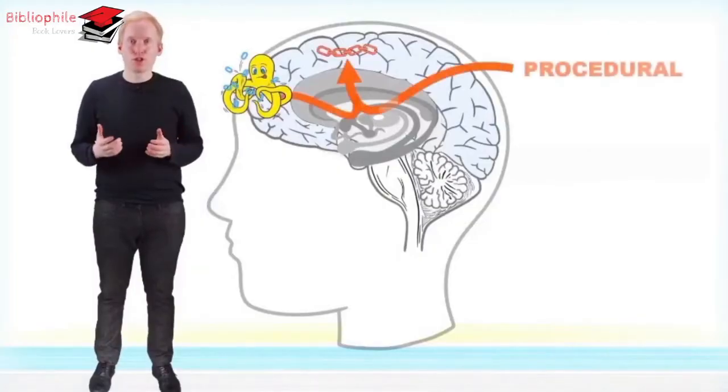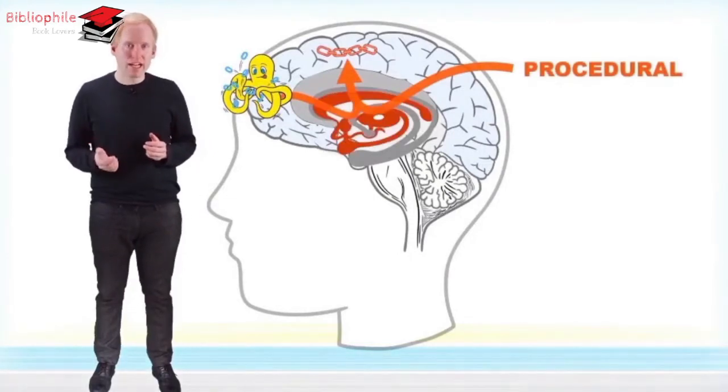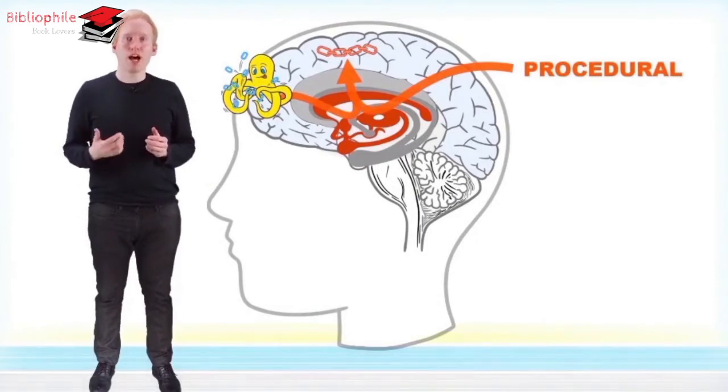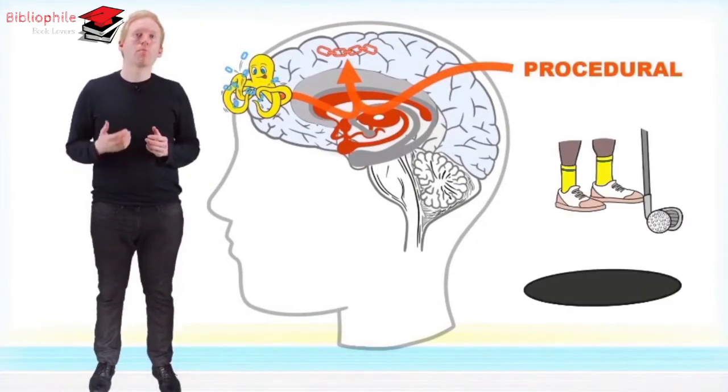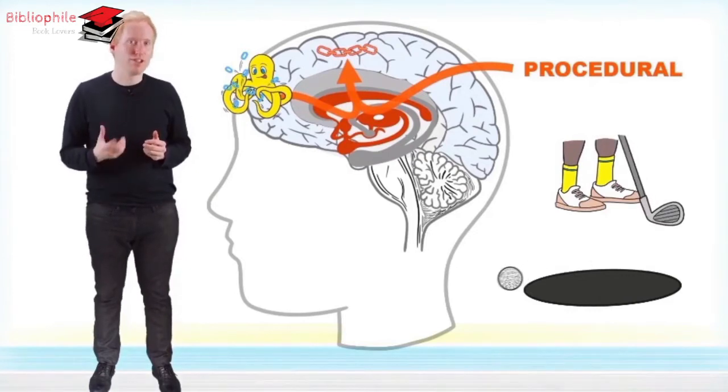The procedural system, on the other hand, goes through your basal ganglia. Unlike the declarative system, you're not aware of how the procedural system learns. But you are aware of the outcome when you learned it, or not.